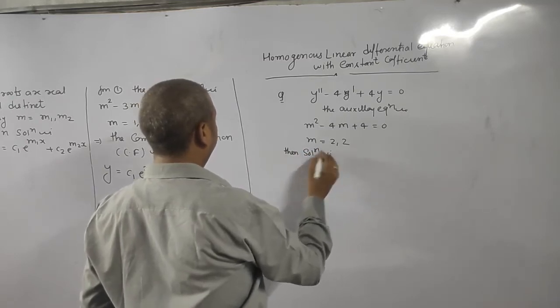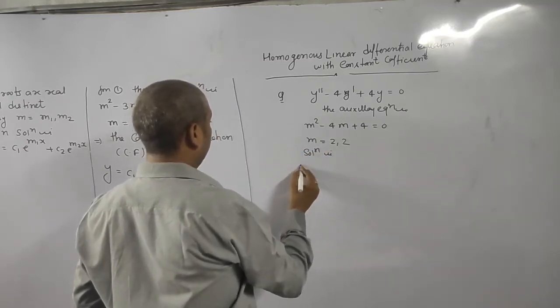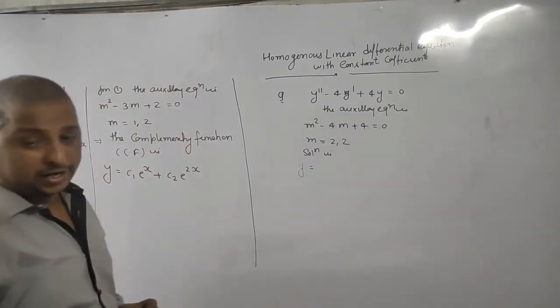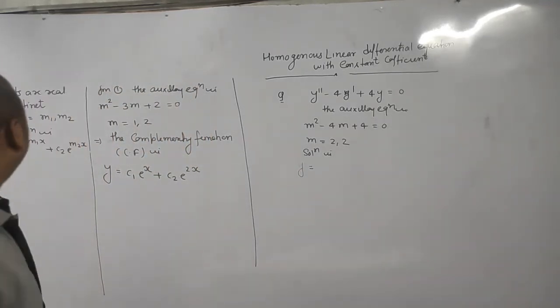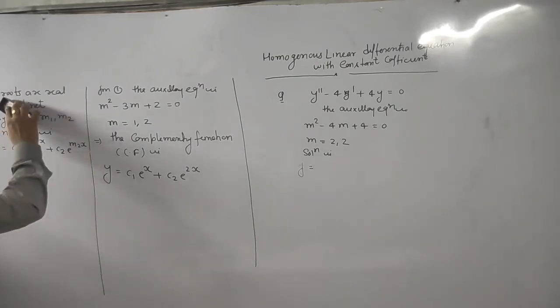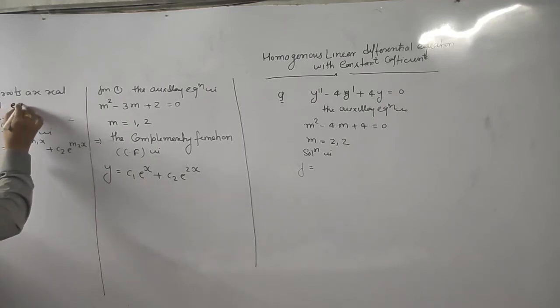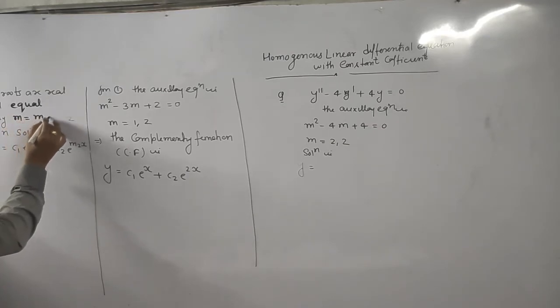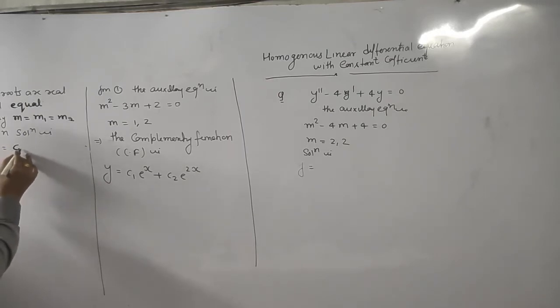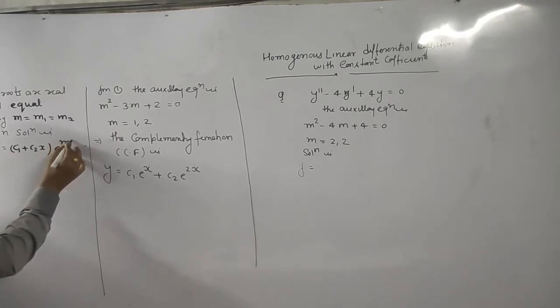So solution is, when roots are real and equal. See, m is equal to m1 is equal to m2 means m1 and m2 both are equal and equal to m. In this case, when roots are equal, solution is always in this form: (c1 plus c2x) e to the power mx.